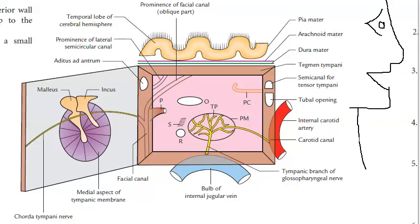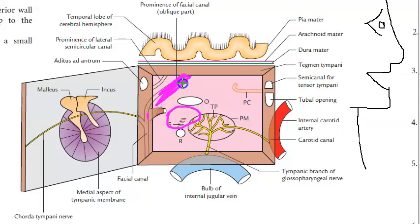Then you should be looking at the sinus tympani. You also have the prominence of the oblique part of the facial canal in the medial wall, and the prominence of the lateral semicircular canal of the internal ear.